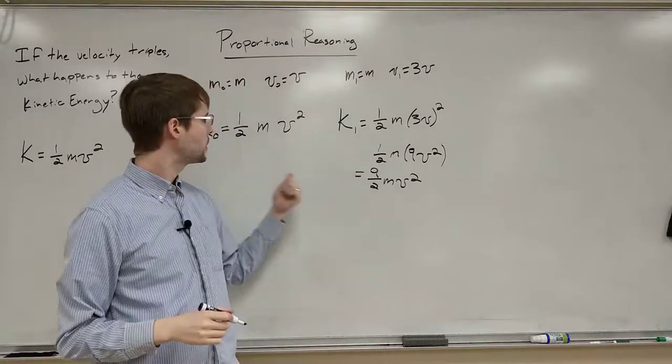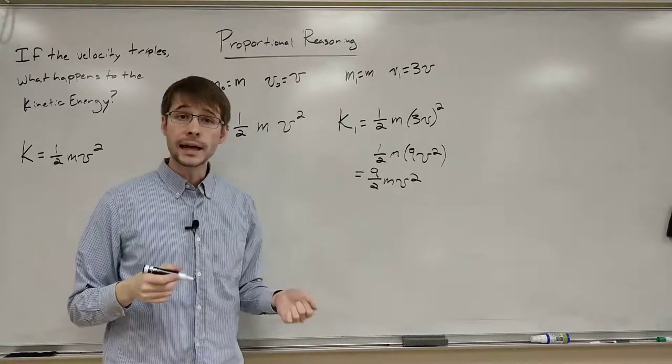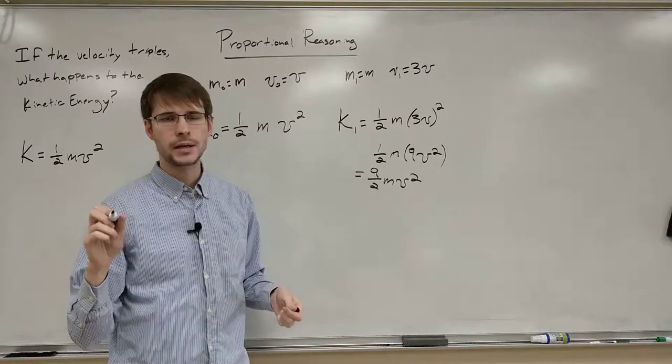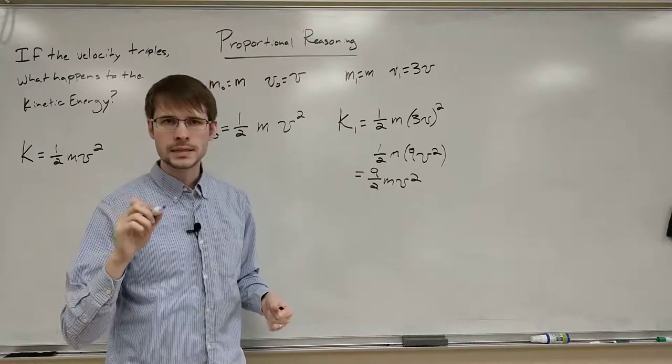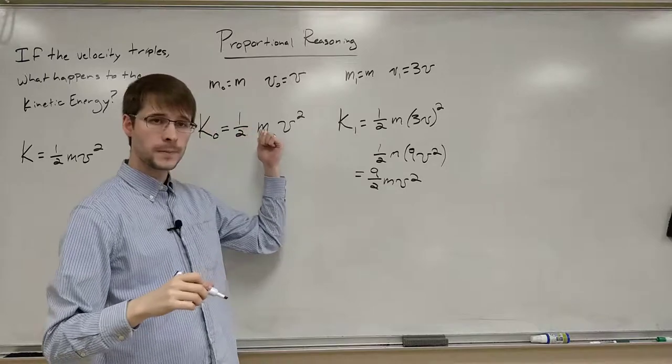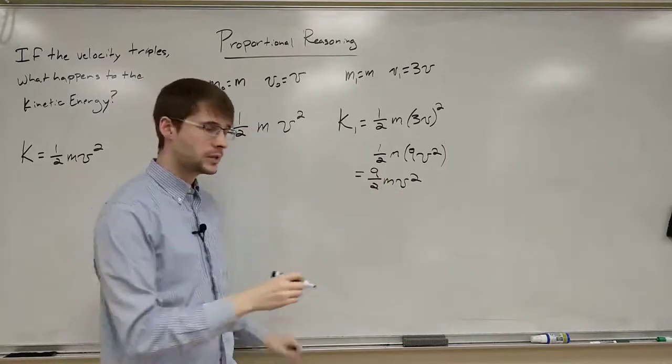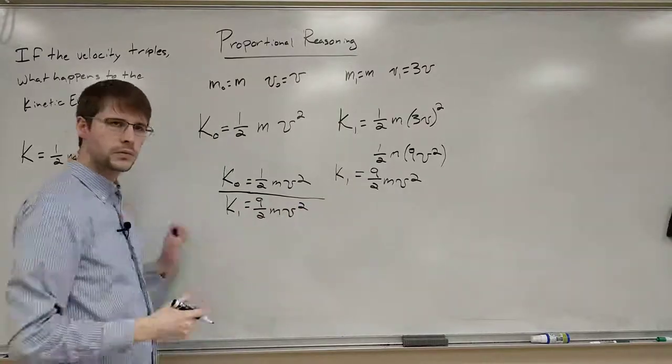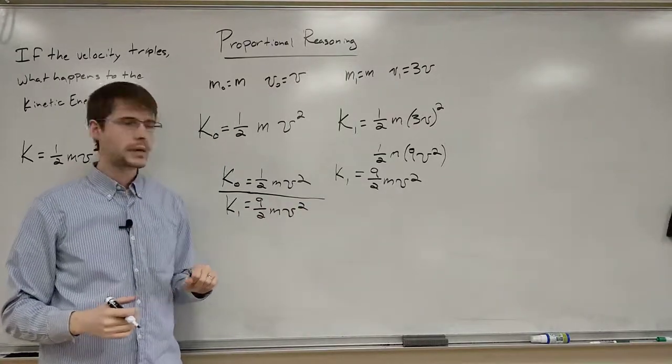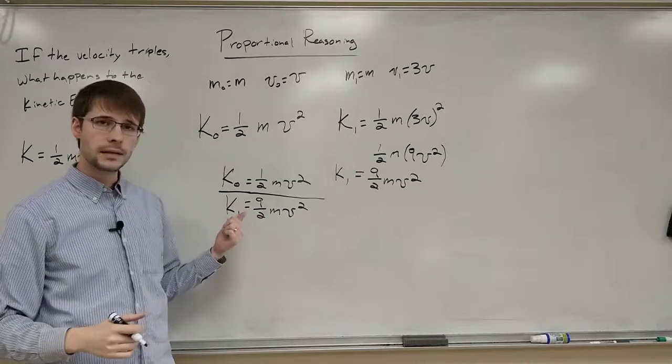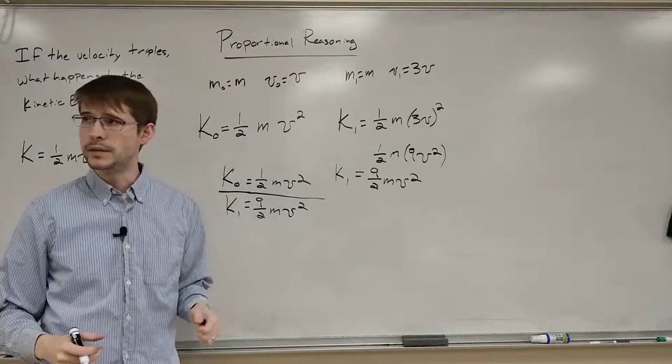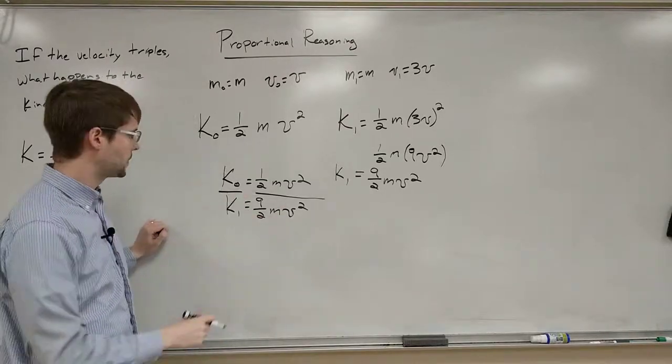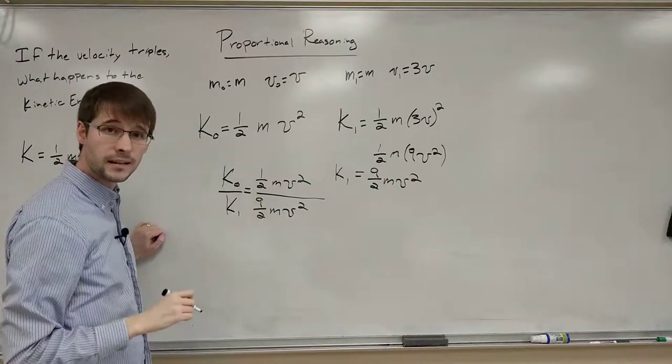And so when we look at this, you might think it's going to be 9 halves as much as what it was at the beginning. But it's not exactly right. So what we're going to do here is this next step, which is we take this equation and divide by this equation. So here we go. We're going to take a look at this and actually say the left hand side is going to be equal to the right hand side when we divide these two things by each other.